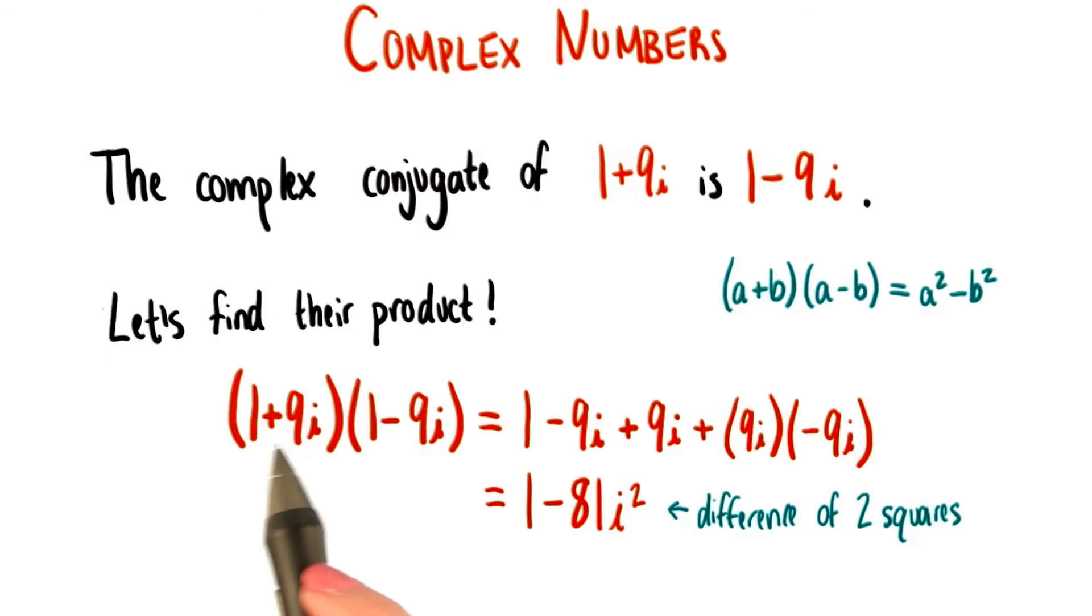1 is equal to 1 times 1, or a squared. And 81i squared is equal to 9i, the quantity squared.